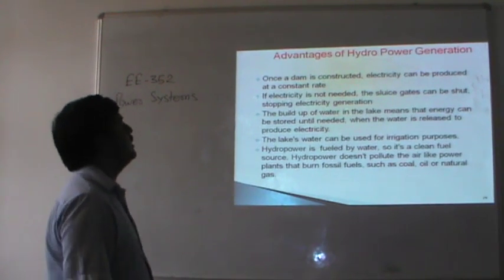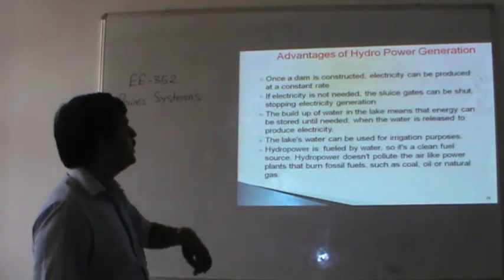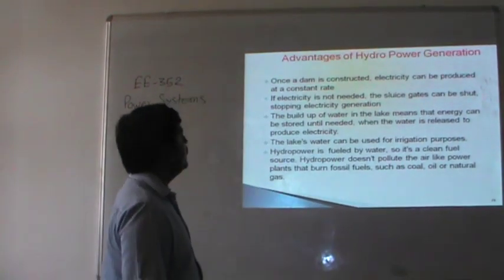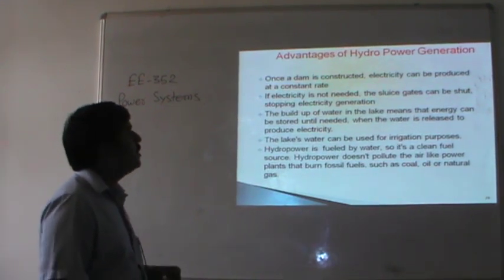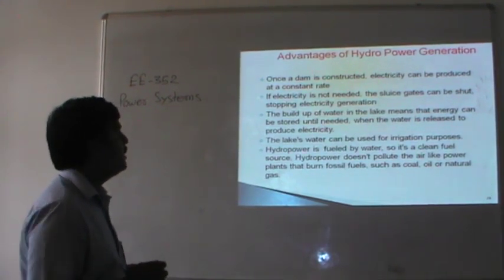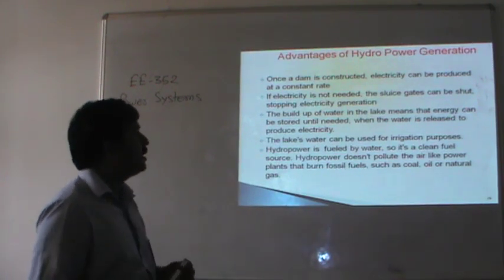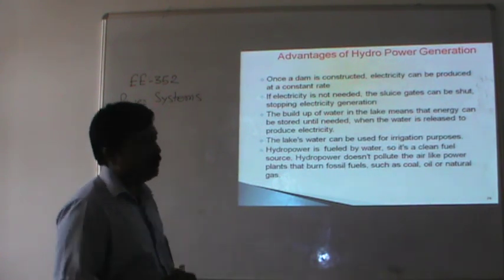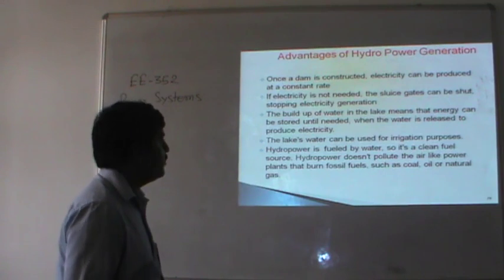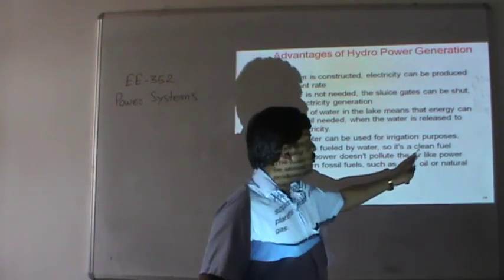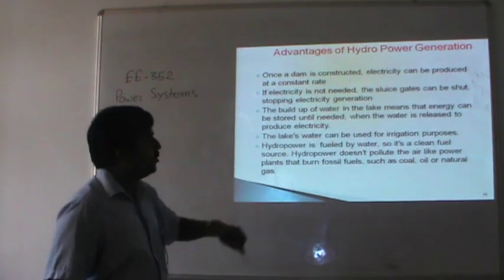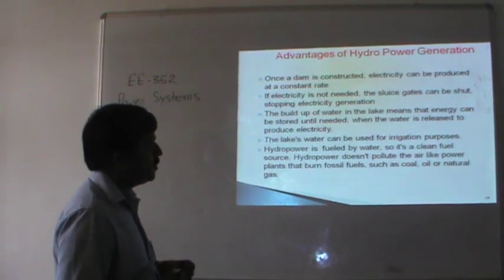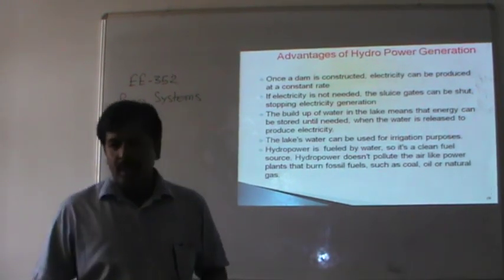If electricity is not needed, the floodgates can be shut down, stopping electricity generation. The build-up of water in the lake means that energy can be stored until needed, when the water is released to produce electricity. The lake water can also be used for irrigation purposes. Hydro power is a clean fuel source and does not pollute the air like thermal power plants that burn fossil fuels such as coal, oil or natural gas.